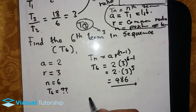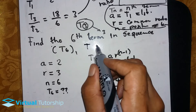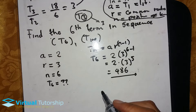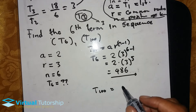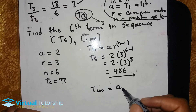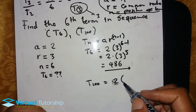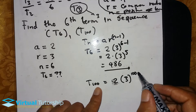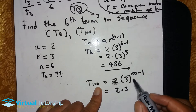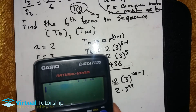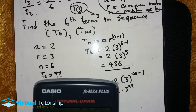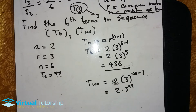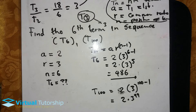So T6 equals 486. Sometimes when you think about the 100th term, T100 would be equal to a = 2 and r = 3, so T100 = 2 × 3^99. That's a very large number! Anyway, is there any question regarding the geometric sequence? Now let's start our second example.